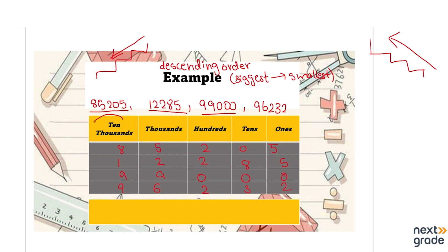Let's look at the ten-thousands place value because we compare at the biggest place first. In this question, two numbers have the same ten-thousands digit — 9 and 9 — so we cannot compare them yet. We move to the thousands place. There, one number has 9 and the other has 6, so 9 is bigger. That means 99,000 is the biggest number overall and comes first.